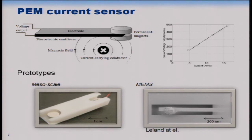Based on the theory and modeling, we prototyped different sensor versions. The first is a mesoscale sensor, about one and a half inches in length. Work led by our former graduate student Dr. Eli Leland produced MEMS current sensors, and Chris Sherman is now working on optimization and fabrication of the next generation of MEMS sensors. We hope to deploy these MEMS sensors onto circuit breaker panels to monitor energy consumption within the next few months.